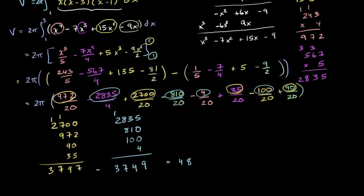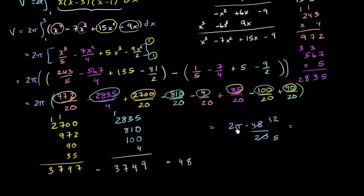Both 48 and 20 are divisible by 4, giving 12/5. So the whole expression equals 2π × 12/5. And 12 × 2 = 24, so our final answer is 24π/5. And we are done.